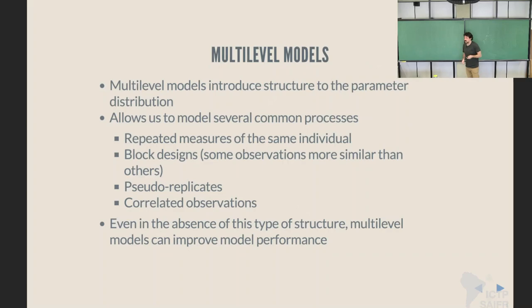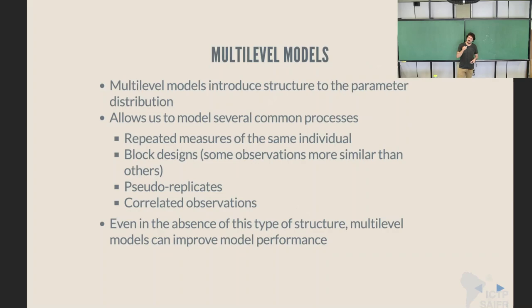It can be used very powerfully to model repeated measures. If you measure the same individual several times, you can't treat those observations as independent — you're measuring the same unit several times. What you can do is assign a parameter specifically for that individual, which will make sure that you expect those repeated measures to be more similar among themselves than they are with other units, allowing you to capture this structure.